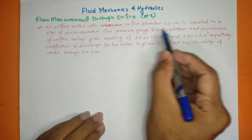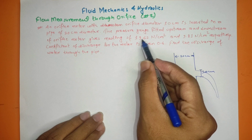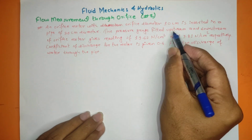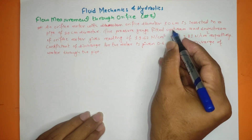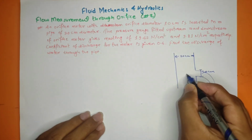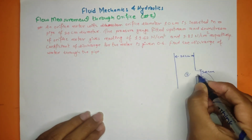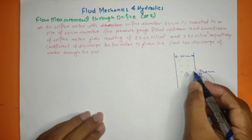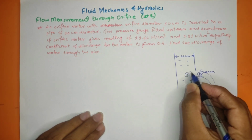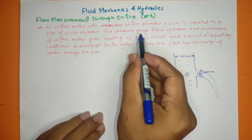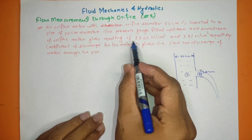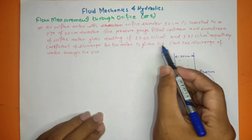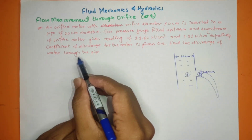The pressure gauges fitted upstream and downstream of the orifice meter give readings of 19.62 newton per cm² and 9.81 newton per cm² respectively. The coefficient of discharge for the meter is given as 0.6. Find the discharge of water through the pipe.